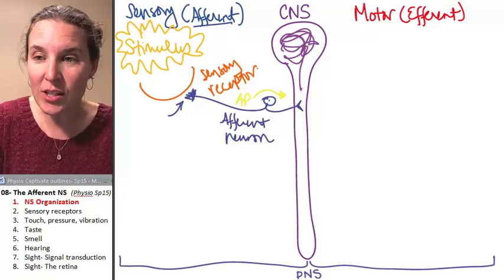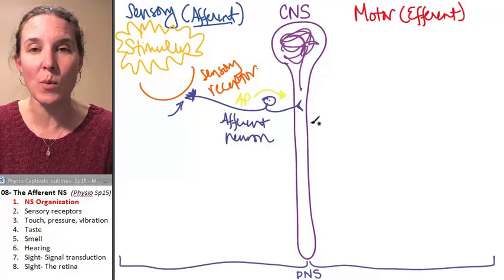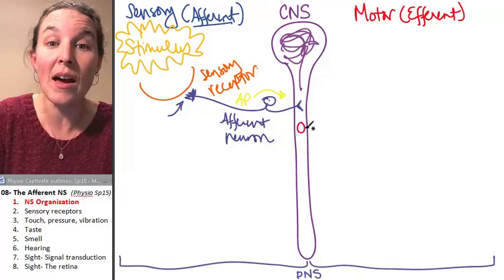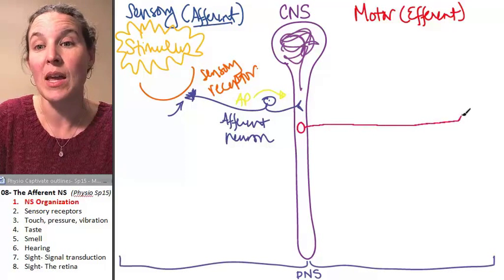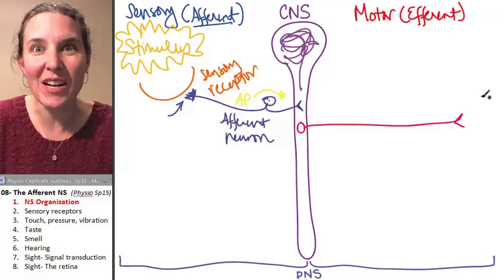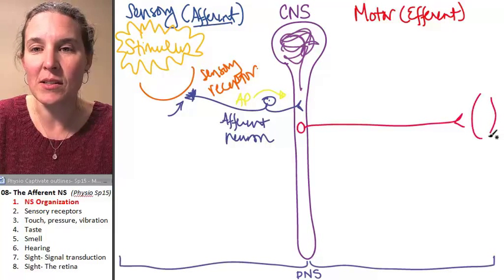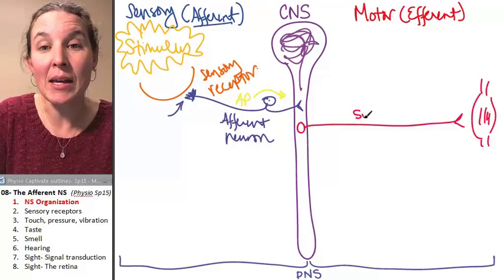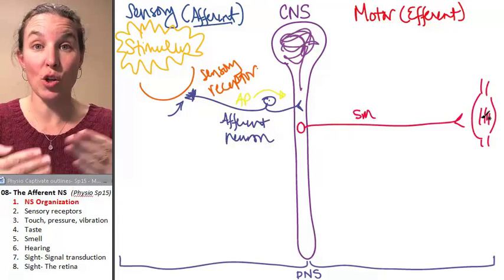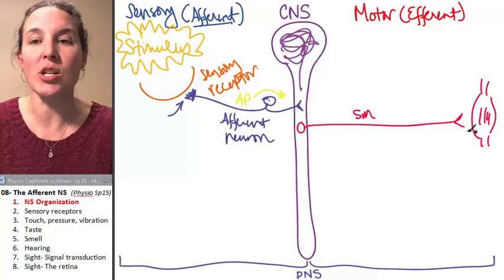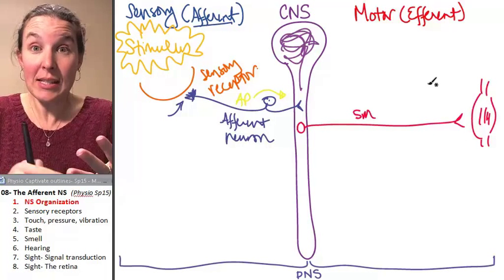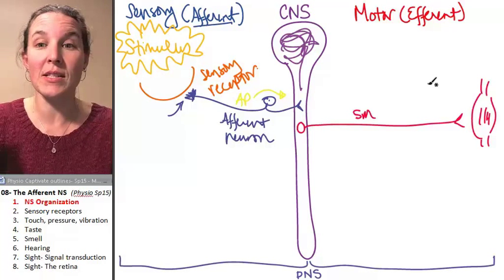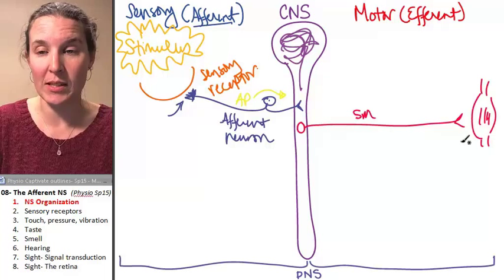The action message, the message that says, hey, we need you to do something, that message is carried through the efferent nervous system. And if my effector is skeletal muscle, then this is a somatic motor neuron, and the information is considered somatic motor, and we will have some sort of skeletal muscle action from the message.